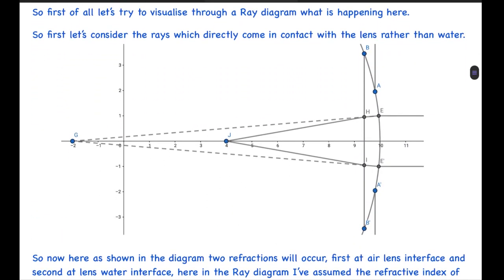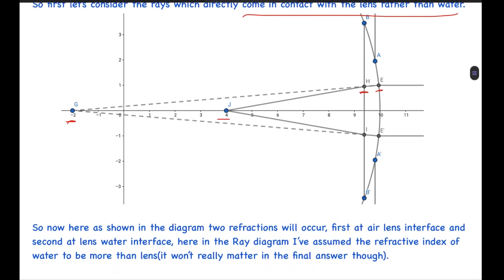We will try to visualize through a ray diagram what is happening here. Let's consider the rays which directly come into contact with the lens rather than the water. First refraction occurs at the air-lens interface and second occurs at the lens-water interface. After the first refraction, I have assumed that the image forms at G, and after the second refraction it forms at J. As shown in the diagram, two refractions will occur: first at air-lens interface and second at lens-water interface. In the ray diagram, I have assumed the refractive index of the water to be more than the lens, although it won't really matter in the final answer. That's how the first image will be formed.